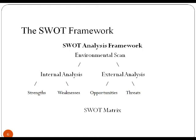What may represent a strength with respect to one objective may be a weakness for another objective. The factors may include all four P's as well as personnel, financial, and manufacturing capabilities. The external factors may include macroeconomic matters, technological changes, legislation, and socio-cultural changes, as well as changes in the marketplace or competitive position. The results are often presented in the form of a matrix.